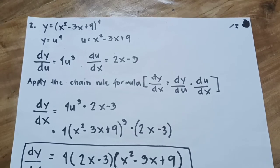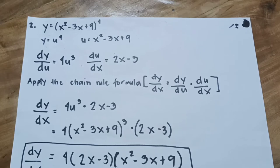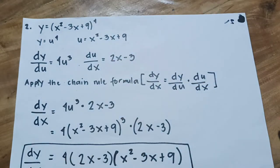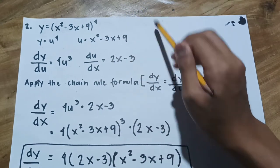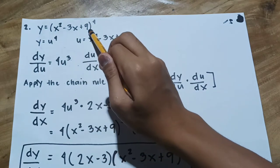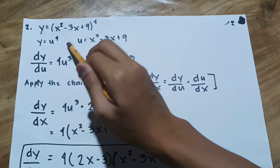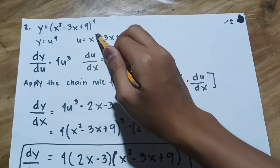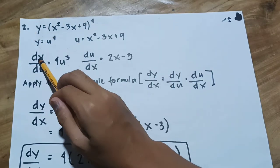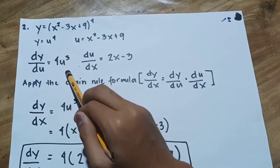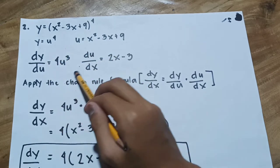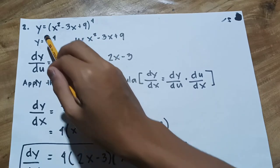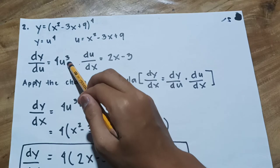Example number 2: Suppose we want to differentiate y = (x² − 3x + 9)⁴. The first thing to do is substitute and identify y as the outer function, y = u⁴, and u as the inner function, u = x² − 3x + 9. The derivative of y with respect to u is 4u³. We just use the power rule here: 4 times 1 equals 4, copy the u, then 4 minus 1 equals 3.